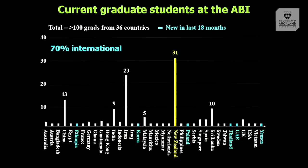In terms of graduate students, this is a really interesting change from the early days. All our original students were locally born, but 70% of our grad students now are international, from 36 different countries, with new ones being added all the time. The ones in blue are those added in the last 12 to 18 months.